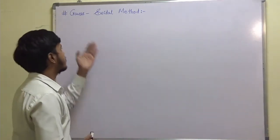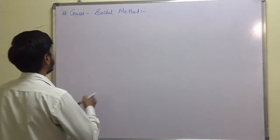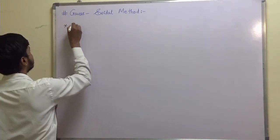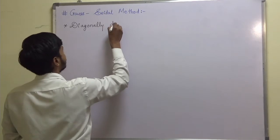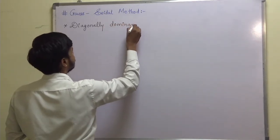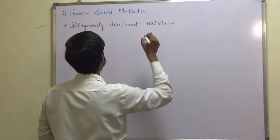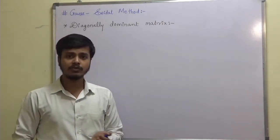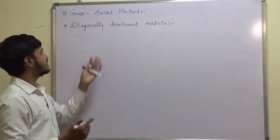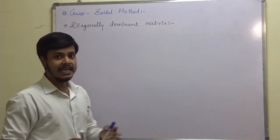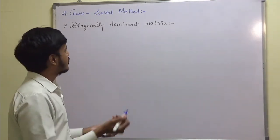To study the Gauss-Seidel method, there would be a term named as diagonally dominant matrix. This is the terminology that you may encounter while solving problems on the Gauss-Seidel method. Let me tell you what this diagonally dominant matrix is. As the name itself suggests, the matrix is dominated by the diagonal elements. So let us see the bookish definition.